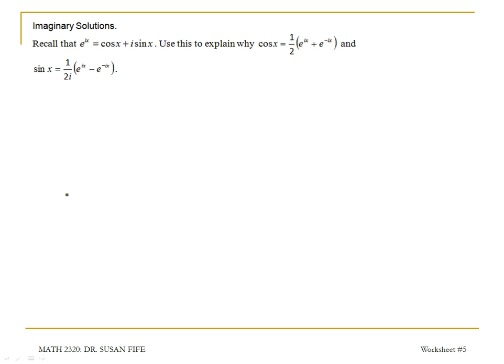Okay, here, recall that this is a definition. e to the ix is cosine x plus i sine of x. And we're going to use that in order to come up with solutions that look like sines and cosines.